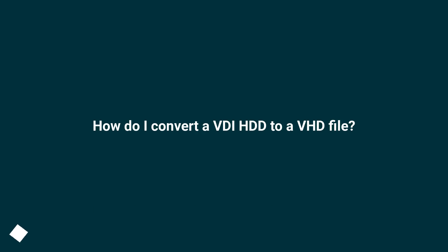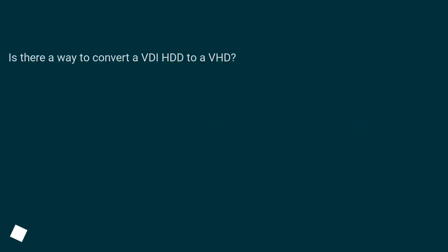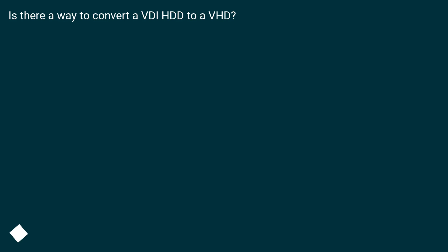How do I convert a .vhd to a .vhd file? Is there a way to convert a .vhd to a .vhd?